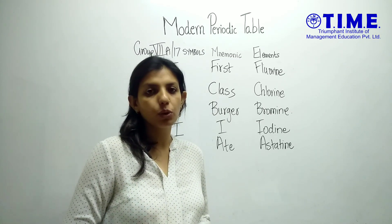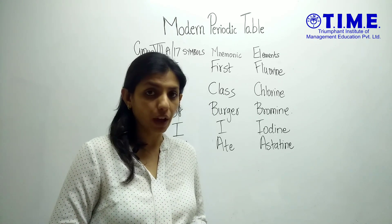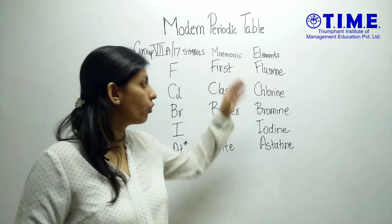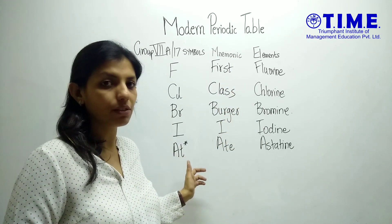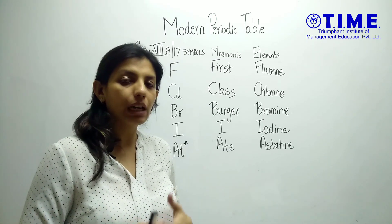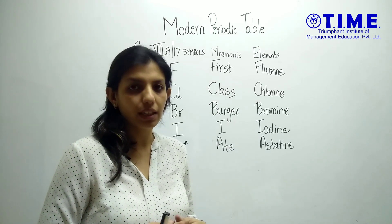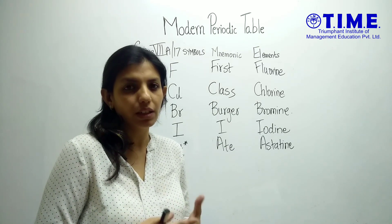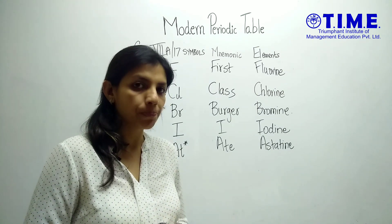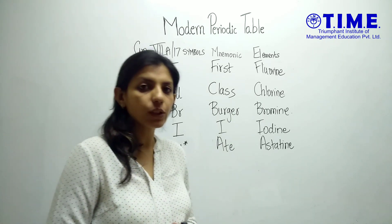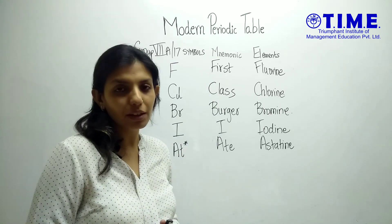Now let's look at the elements of Group 7A or Group 17, also known as the halogen family. The elements belonging to this group are fluorine, chlorine, bromine, iodine and astatine. Remember, astatine is a radioactive element — marked with a star — so it will not feature in your normal questions since you are not studying much about radioactive elements in this portion. The mnemonic for this group is: 'First class burger I ate.'